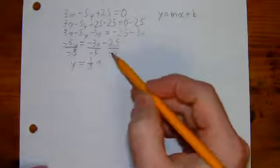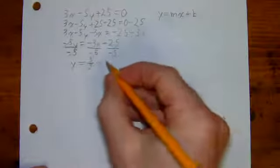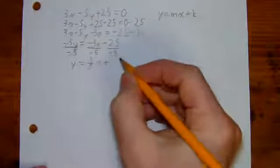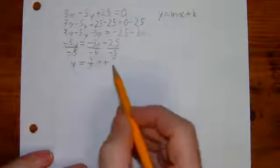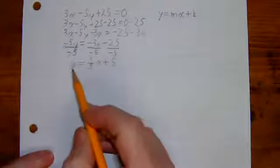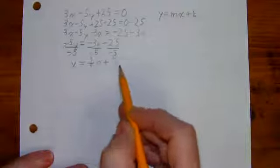For the last term, we have negative divided by negative again. So that's going to be positive. 25 divided by 5 is 5. And now you can see that we have the equation arranged y equals mx plus b.